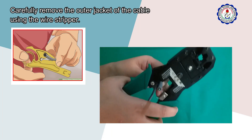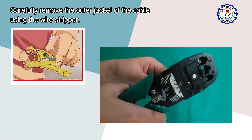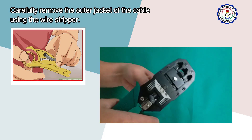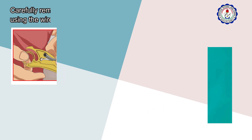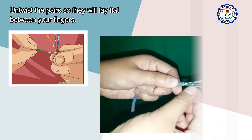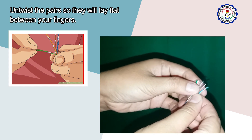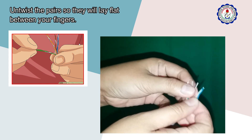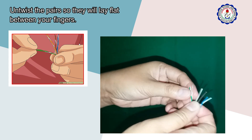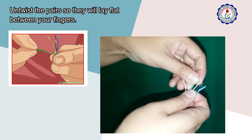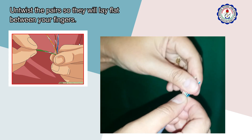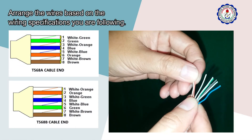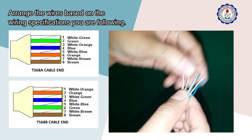Carefully remove the outer jacket of the cable using the wire stripper. Then untwist the pairs so they lie flat between your fingers.